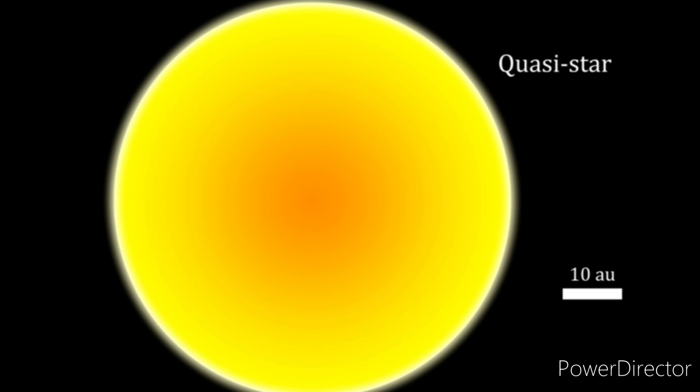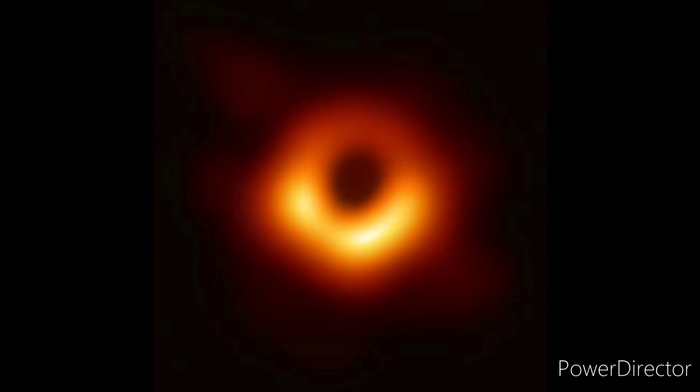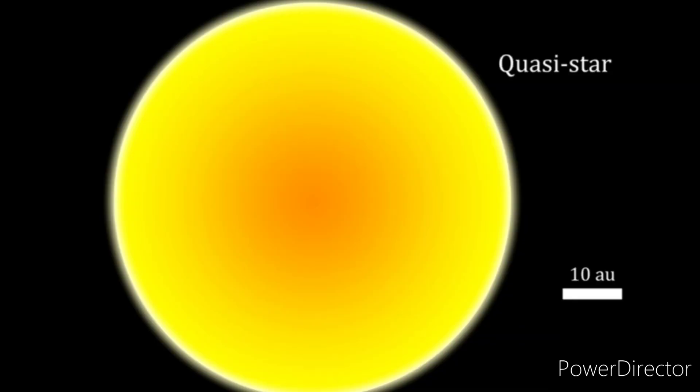It has been proposed that these intermediate mass black holes are the ancestors of modern supermassive black holes. So we learned about the concept behind the quasi-stars, but what about its properties?